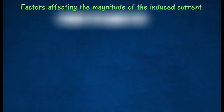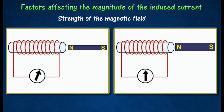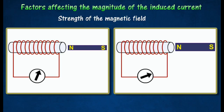The induced current can be increased by increasing the strength of the magnetic field through the use of a stronger magnet. For example, when a stronger magnet made by binding two bar magnets together is moved slowly into the solenoid, the galvanometer shows a larger deflection, indicating a larger current is induced in the solenoid.